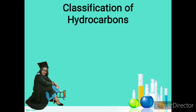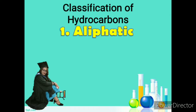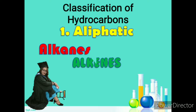What are the different classifications of hydrocarbons? The first one is the aliphatic hydrocarbons, and this is what we're going to talk about in this class. Aliphatic hydrocarbons have different types: we have the alkanes, the alkenes, and the alkynes.